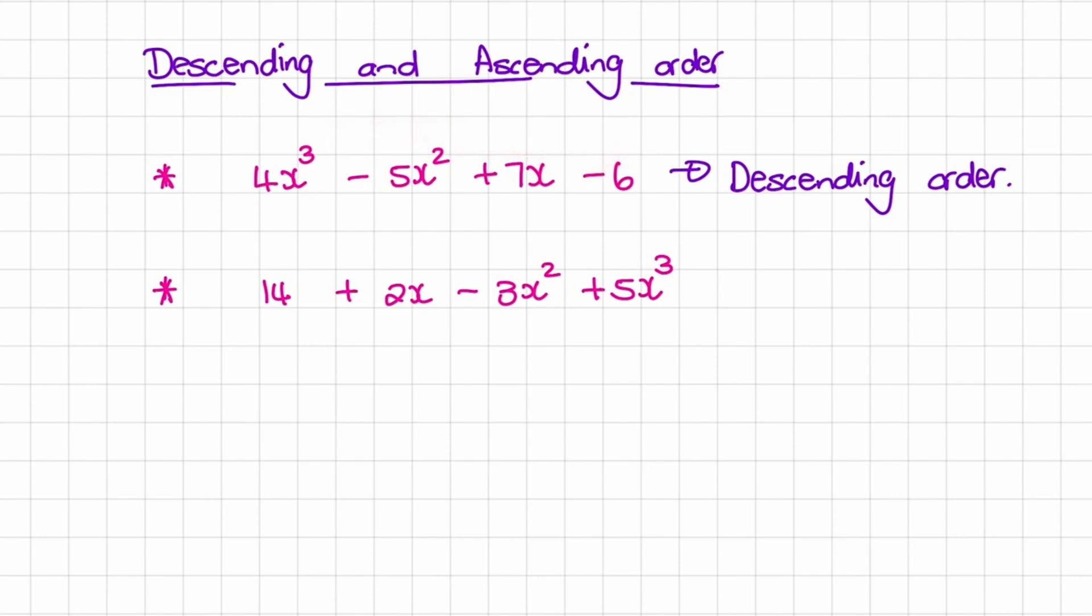Now in our second example, we would see our first term doesn't have x or x to the power of anything. Our second term has only 1x or x to the power of 1, and then it goes 2, 3. So we start with nothing,